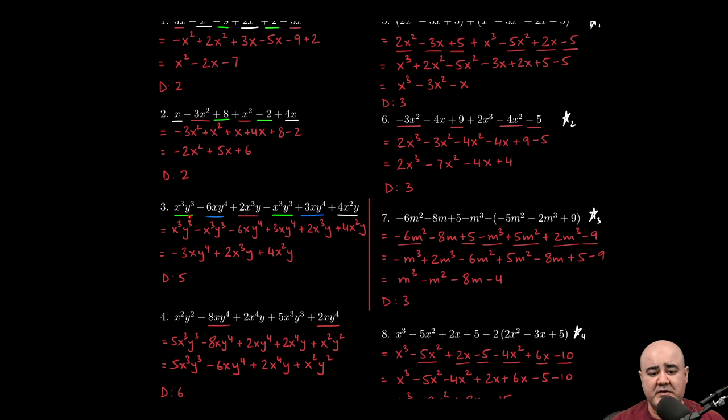I know that the degree 6 terms have to go first. So x to the third, y to the third, and this negative x to the third, y to the third are the ones that are written first. Then I had some terms that had degree 5. So x, y to the fourth, x, y to the fourth. These go next. Then some terms with degree 4, so 2x to the third, y. This is the only term with degree 4, so that goes there. And then finally, 4x squared, y, that's the only term with degree 3, so that goes there.